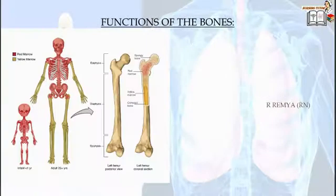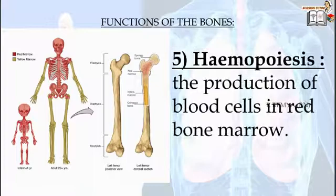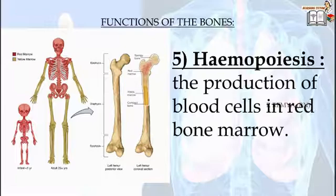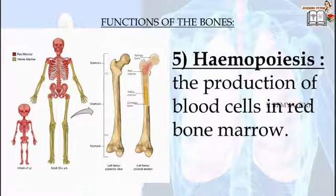The next function is synthesis of blood cells. The major synthetic role of bones is to produce blood cells. The bones themselves are not capable of doing this; instead, they house the bone marrow, which contains hematopoietic stem cells capable of producing blood cells. In infants, bone marrow of all long bones is capable of this synthesis. However, as a person gets older, the red bone marrow turns into yellow fatty marrow, which is no longer capable of hematopoiesis.